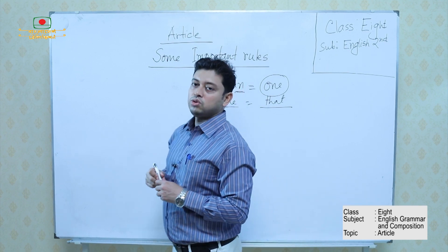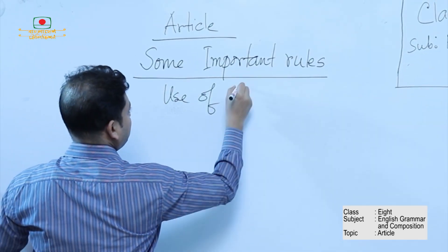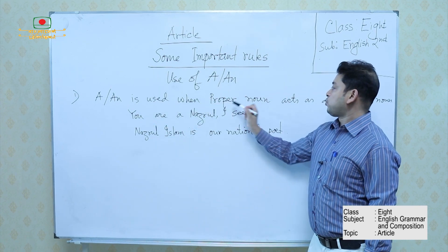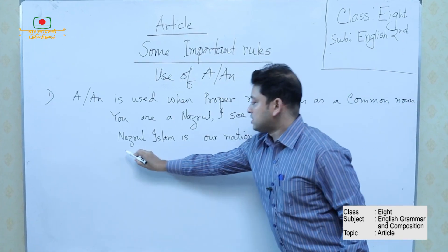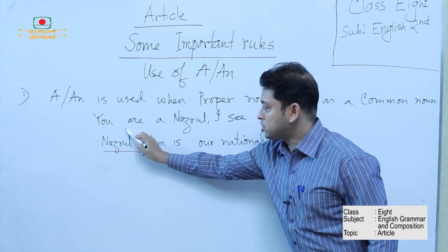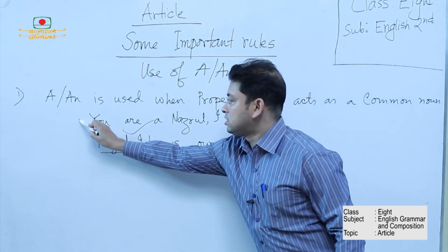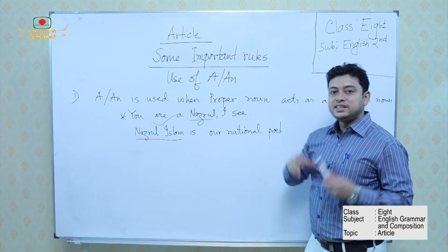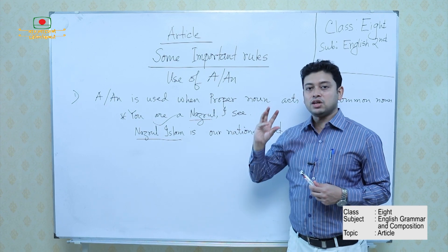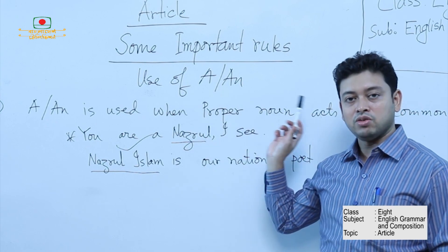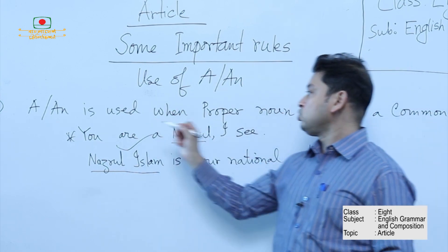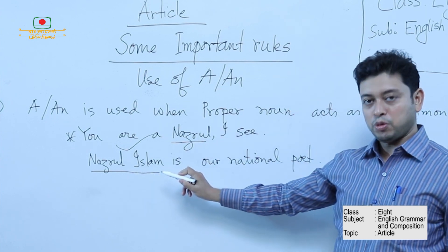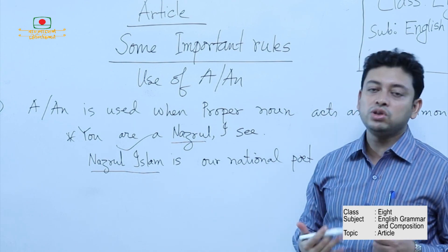According to rule one, A or AN is used when a proper noun acts as a common noun. In 'You are a Nuzrul,' Nuzrul is no more a proper noun — it acts as a common noun representing the quality of that person. Rule number two: A or AN is used when an abstract noun becomes a common noun. For example, 'Helen was a beauty.' Beauty is fundamentally an abstract noun, but here Helen of Troy's beauty is symbolized as a common platform — so beauty acts as a common noun.